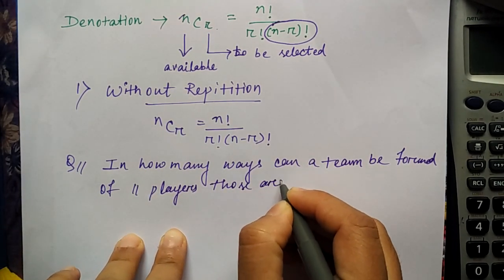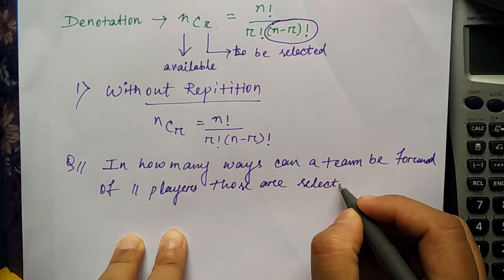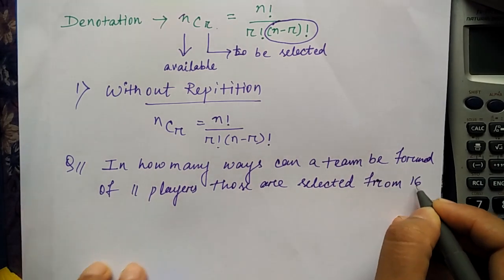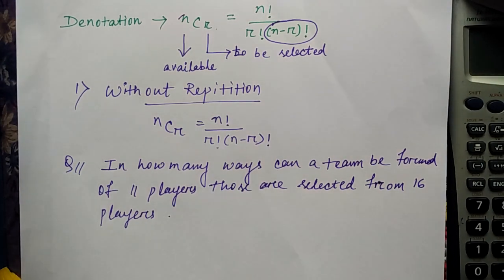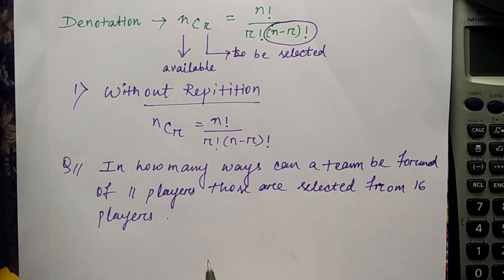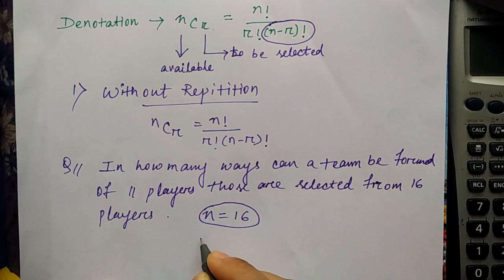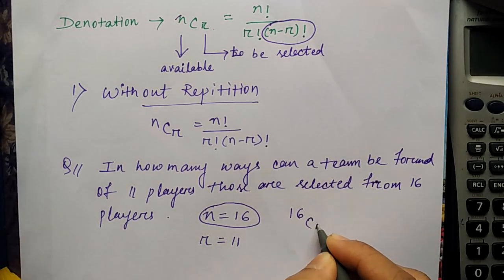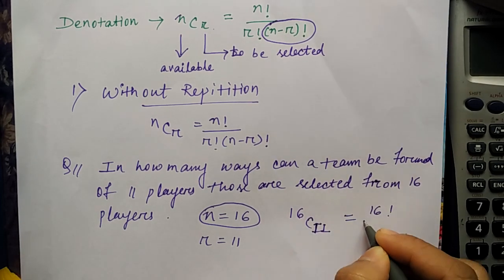Those are selected from 16 players. So my question is: in how many ways can a team be formed of 11 players? How many players are available? That is n equals 16. And how many to be selected? 11. So what is the formula here? It will be 16CR or 16C11, so 16 factorial by 11 factorial into...